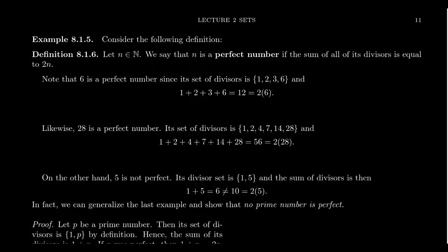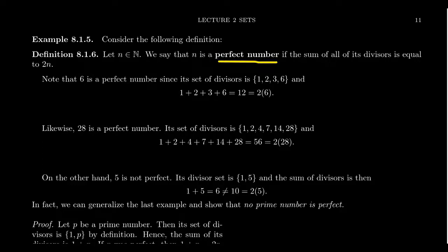The example we're going to discuss is the set of perfect numbers. Let N be a natural number — using our mathematical notation, N is an element of the set of natural numbers. We say that N is a perfect number if the sum of all of its positive divisors is equal to 2N. Since we're only talking about natural numbers, we don't include negative divisors. So we want the sum of all positive divisors to equal 2N — that makes it a perfect number.